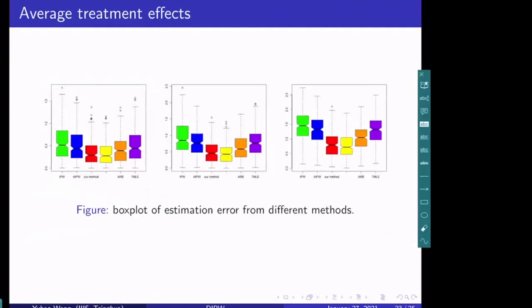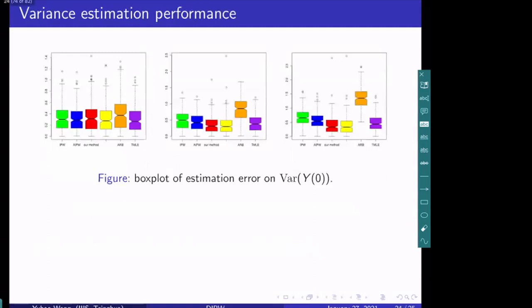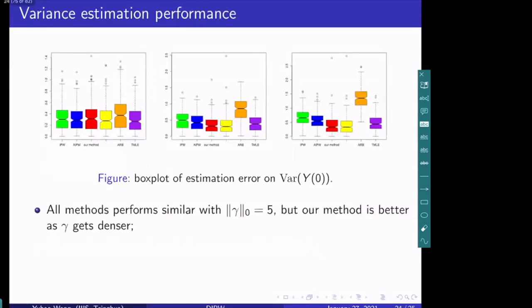The performance results for average treatment effect estimation are shown here. Our method outperforms all other methods in terms of box plot spread. This corresponds to results with propensity sparsity γ equal to 5, 20, and 50. Our method is consistently better, even when the propensity model is a very dense model. For the variance estimation results, all methods tend to perform similarly when propensity sparsity is 5, but our method gets better relative to the others as γ gets denser.